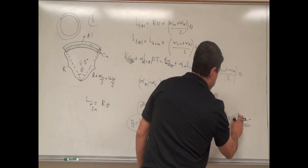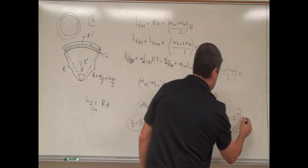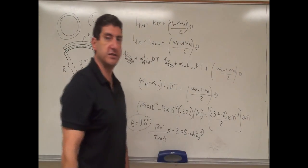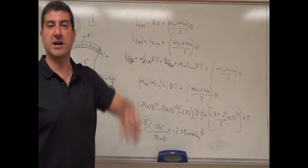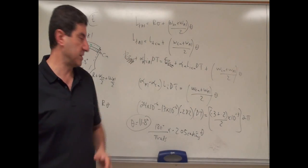And then we would put here, for the angle, we would put 2 pi radians. So now we would solve for the delta t, and then that would tell us how much we would have to heat it up to make a complete circle.